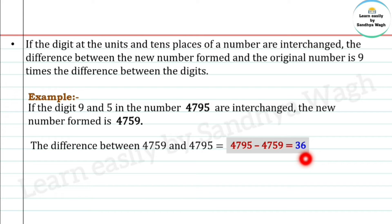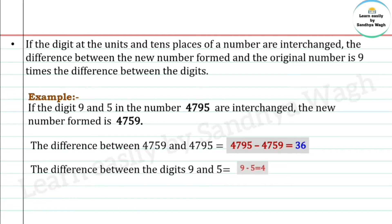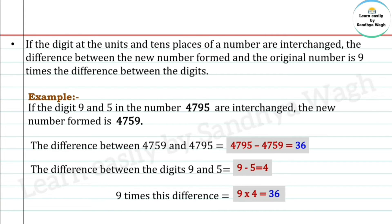The difference between 4759 and 4795 is 36. The units place has 5 and the tens place has 9. The difference between these two digits is 4. And 4 times 9 is 36 — confirming the rule.